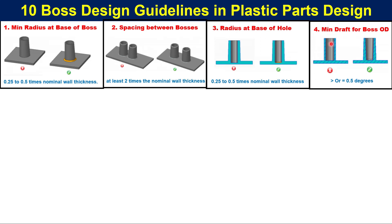Guideline 4: Minimum draft on the boss OD. Draft is used for easy release of the part from the mold cavity, and an appropriate draft on the outer diameter of the boss helps easy ejection. The recommended minimum draft on the outer surface of the boss is greater than or equal to 0.5 degrees.